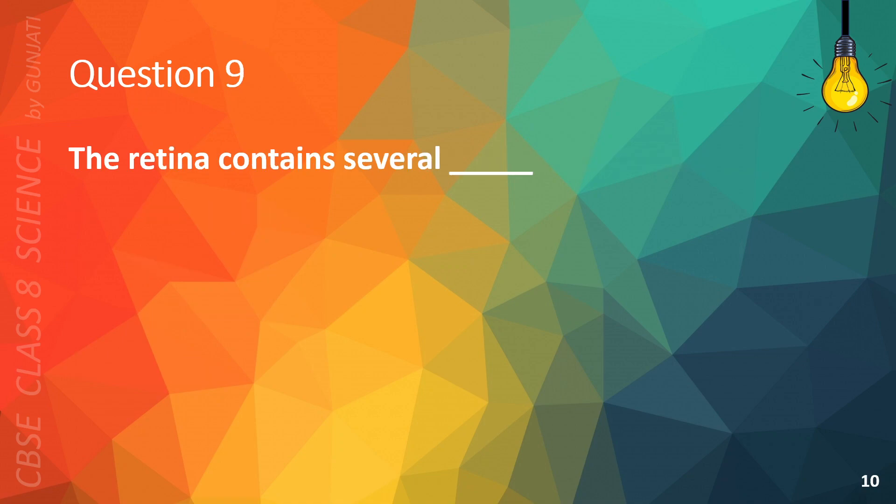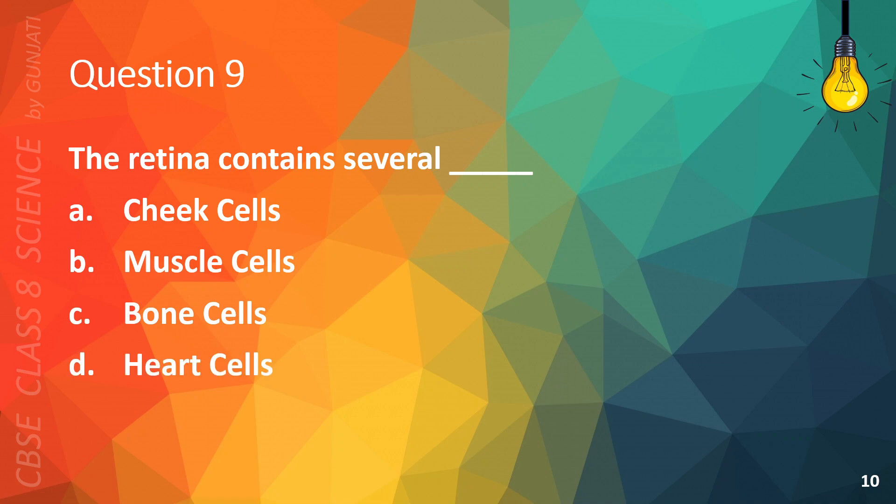Question 9. The retina contains several A. cheek cells, B. muscle cells, C. bone cells, or D. heart cells. The correct answer is B, muscle cells.